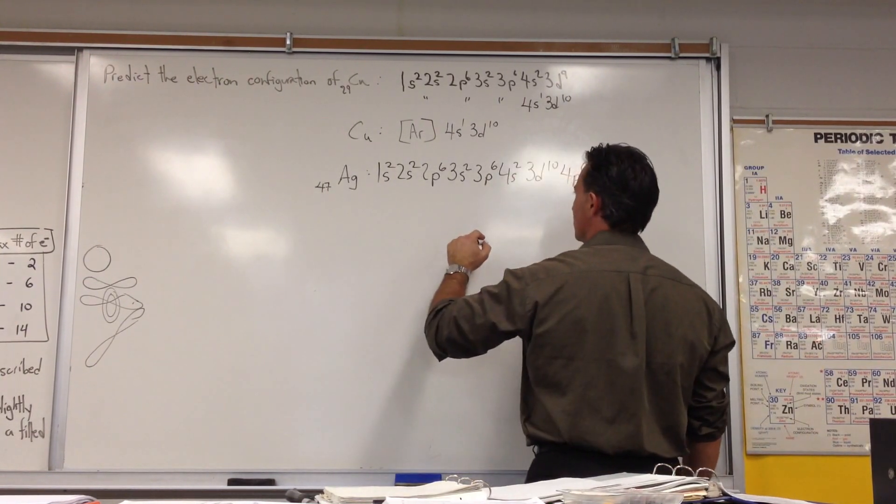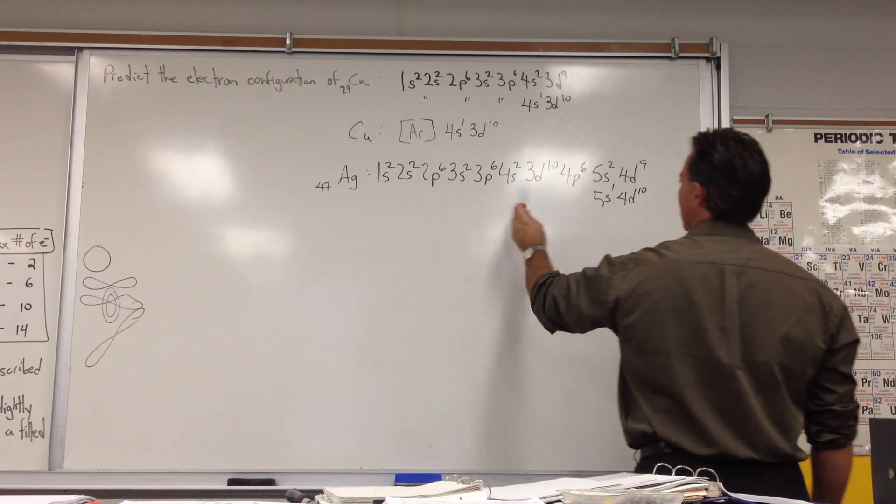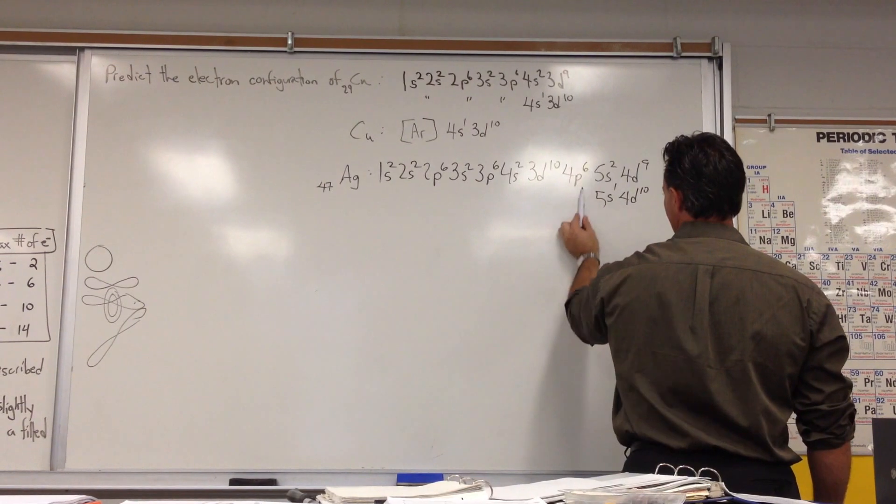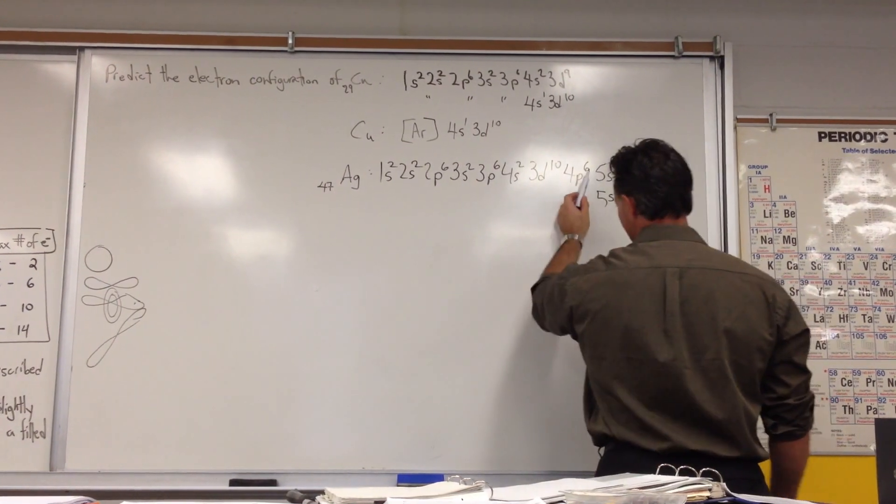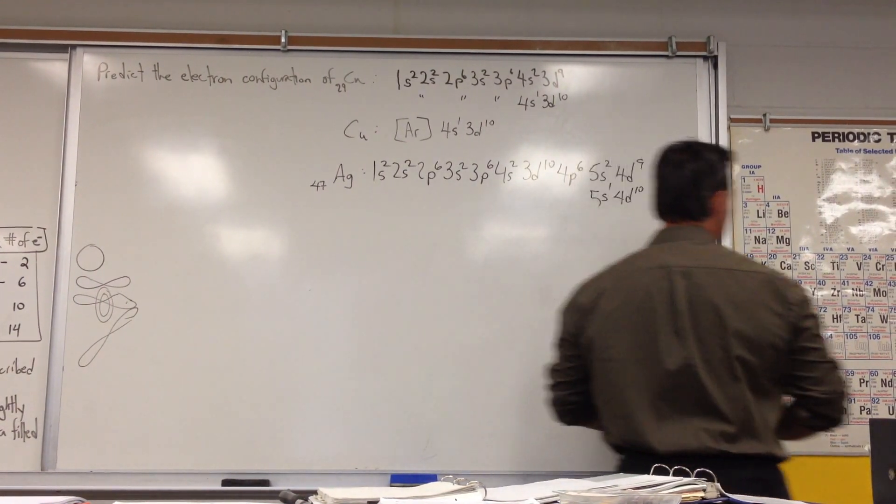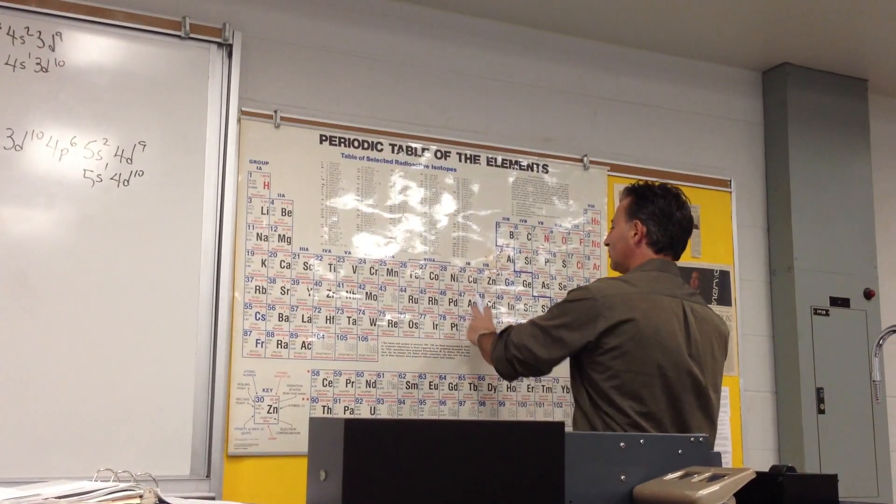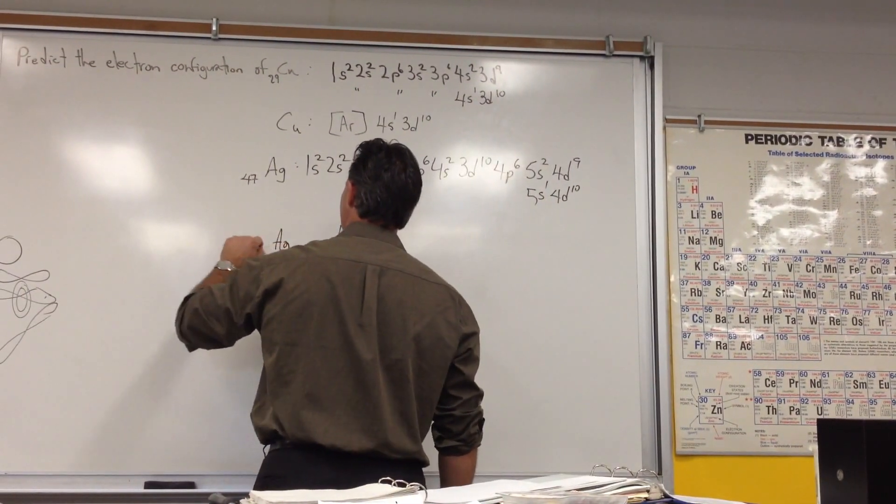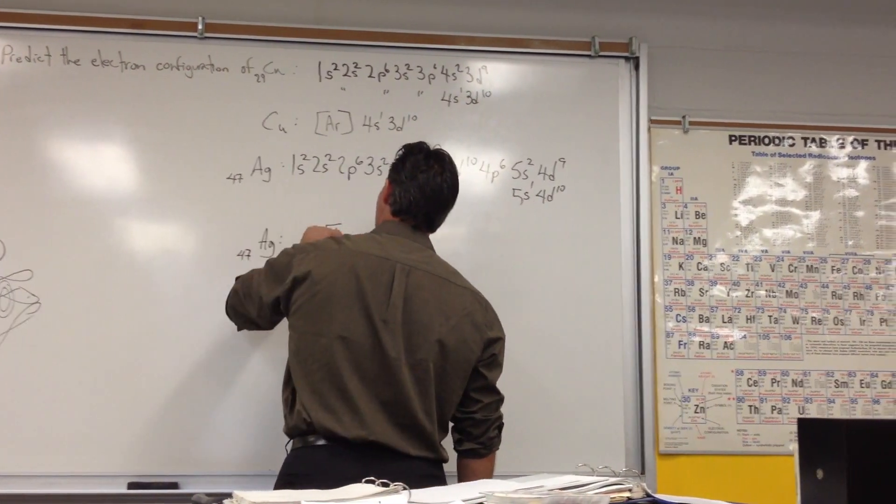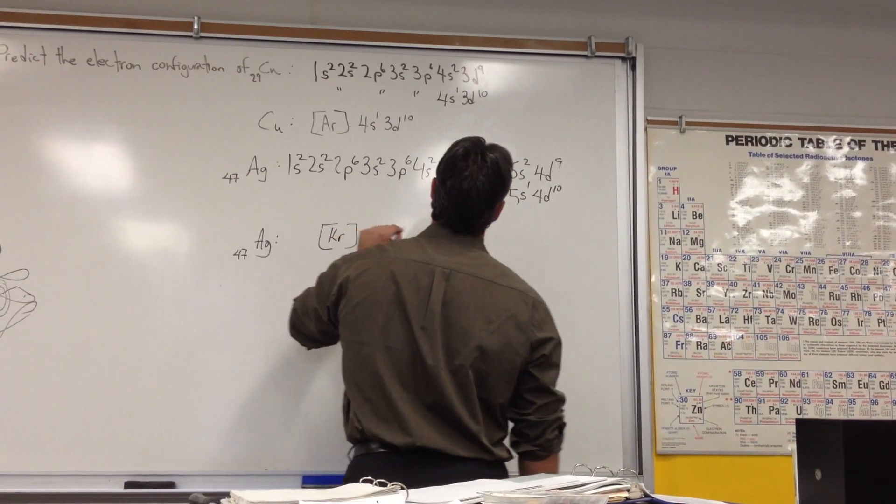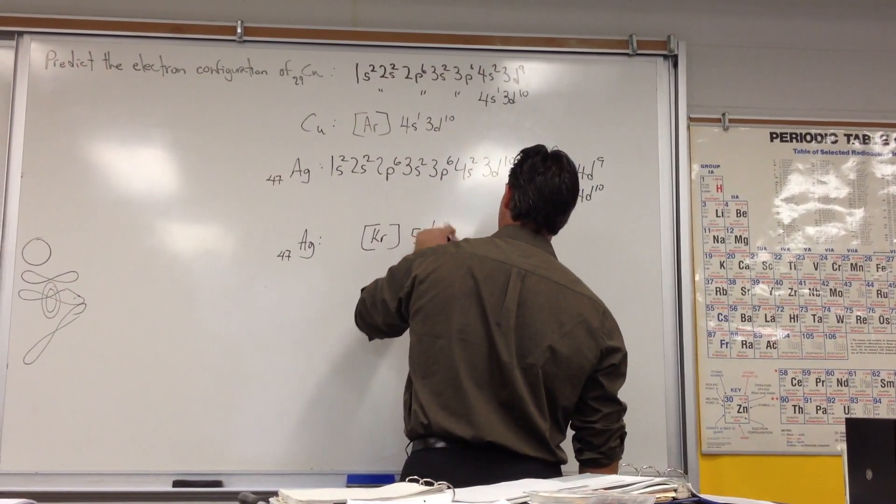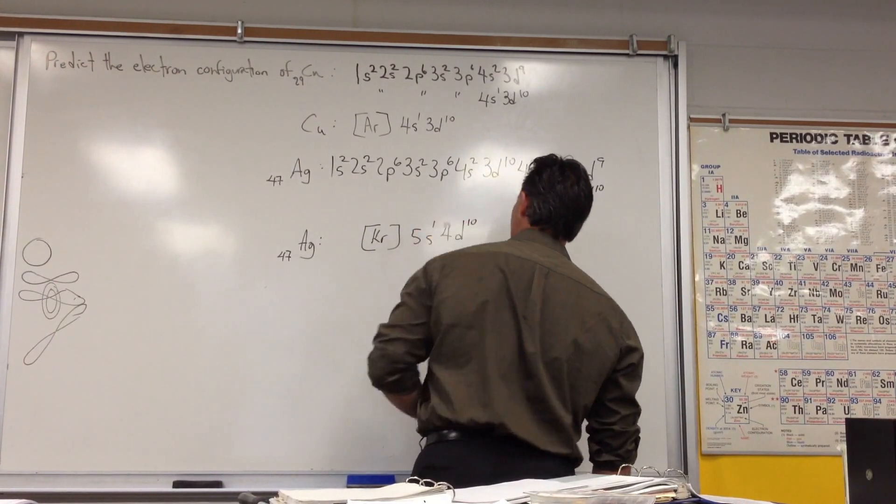And we can rewrite this in the shorthand form. You take the last noble gas that's closest to the end of the configuration, which would be 4p6. Anything with p6 is going to be noble gas. 4p6 means it's krypton. And then the rest is written out. So you can say in square bracket, silver is represented by square bracket, krypton, 5s1, 4d10. And there's your shorthand version of silver's configuration.